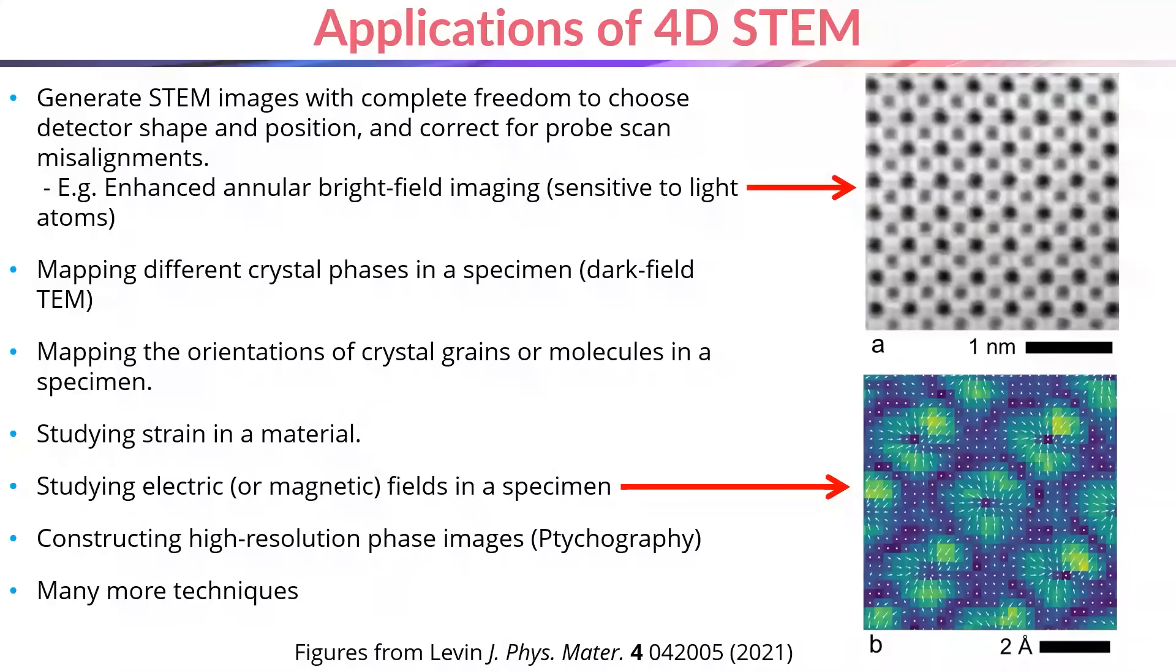You can also use 4D STEM data to make maps of crystalline phases, crystalline strain, or crystal grain orientation in the specimen. Or you can map electric and even magnetic fields, and there are many other possibilities of things you can do with 4D datasets as well.